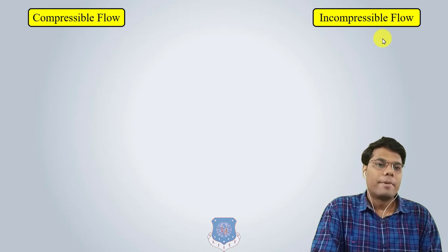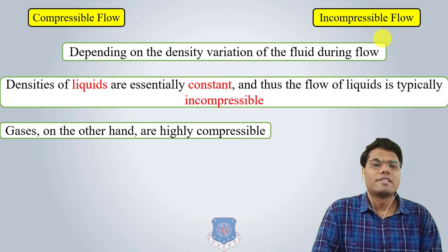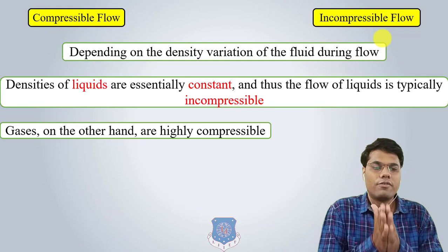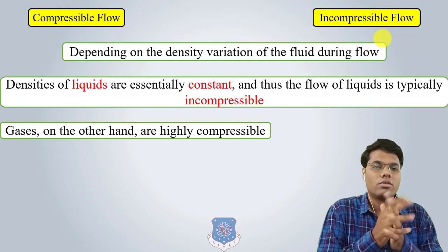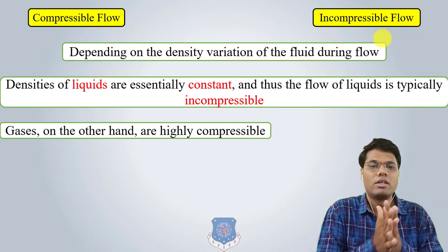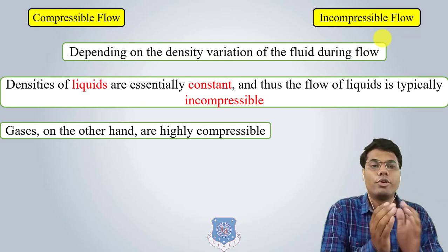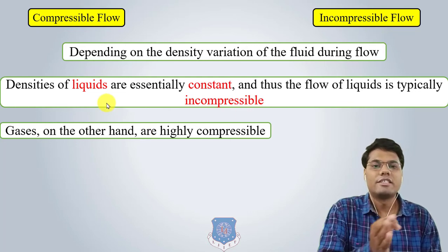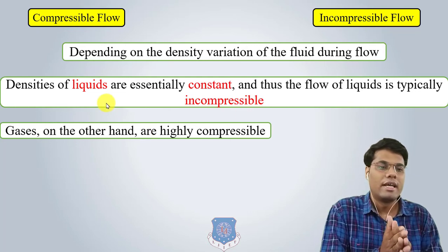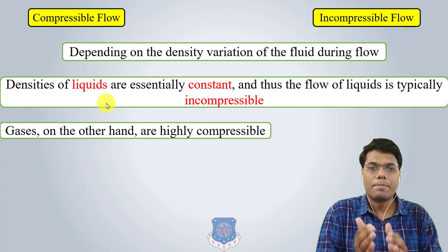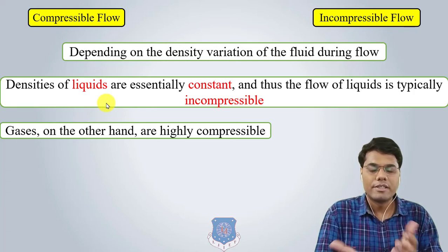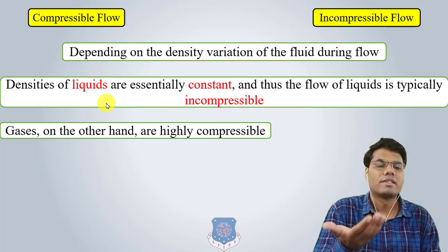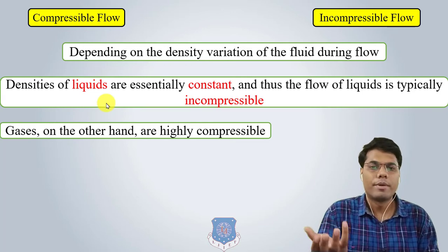Compressible flow and incompressible flow depend on the density variation of the fluid during flow. Generally, the density of liquids is constant, so flow of liquid is typically incompressible. On the other hand, gases are highly compressible, so gas flow is considered compressible flow.